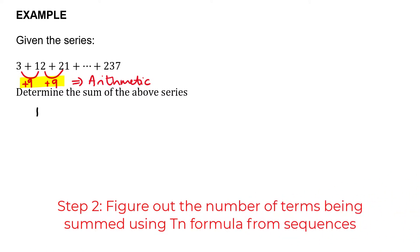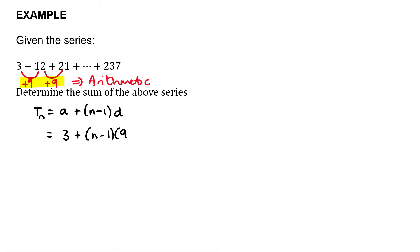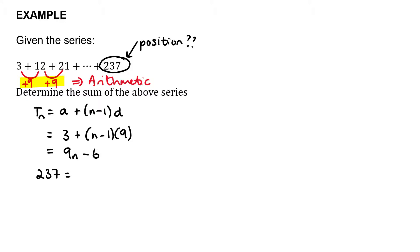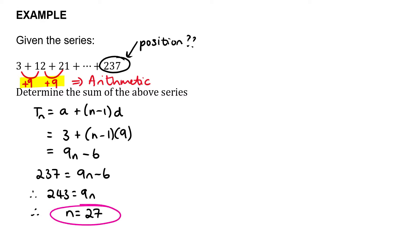To find the number of terms, use the sequence formula: Tn = a + (n−1)d. With a = 3 and d = 9, we get Tn = 9n − 6. Setting 237 equal to 9n − 6 gives 243 = 9n, so n = 27. This tells us we need to sum 27 terms.